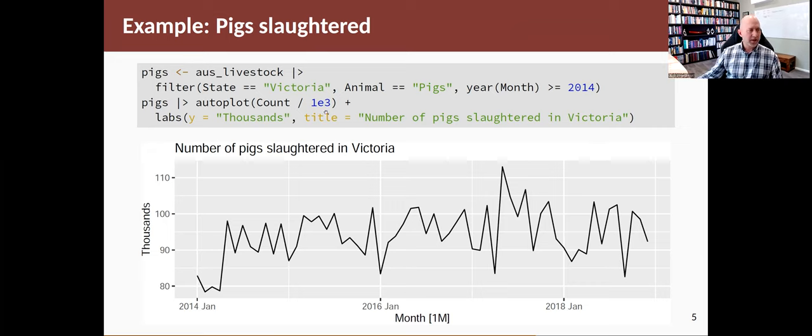I've divided by 1,000 just to make the y-axis look a bit neater. If you just look at the time plot, you probably won't be able to detect anything particularly unusual there. It doesn't look like there's a trend, it doesn't look like there's any seasonality, it looks pretty random.